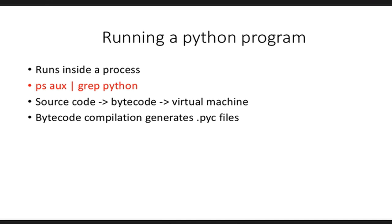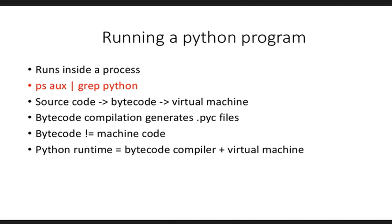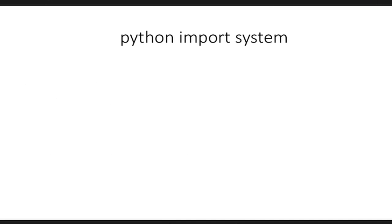One important thing to understand is that your Python bytecode is not the same as machine code that actually gets executed. The virtual machine converts your bytecode into machine code. What we understand as a Python runtime is both the bytecode compiler and the virtual machine. Python requires both the bytecode compiler and the virtual machine to be shipped to your hosts — or even on your own computer — to run a Python application.